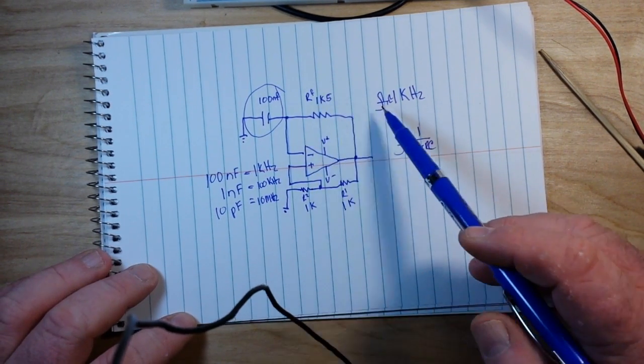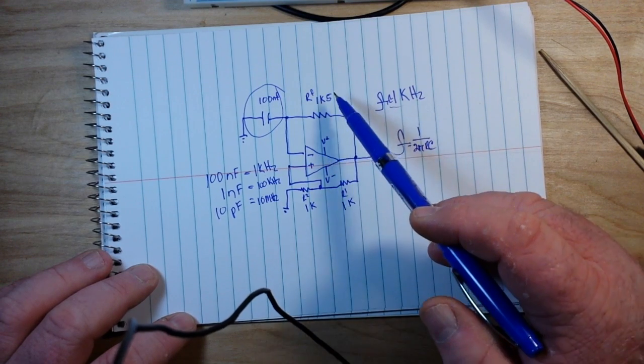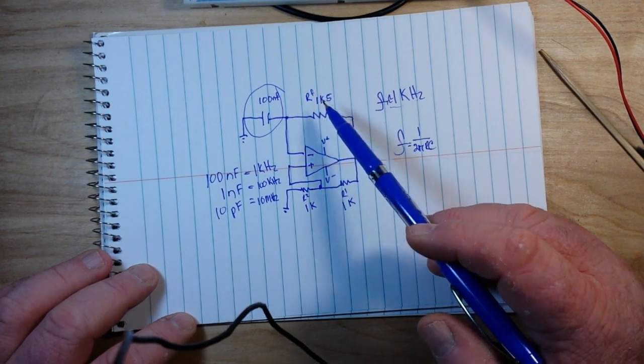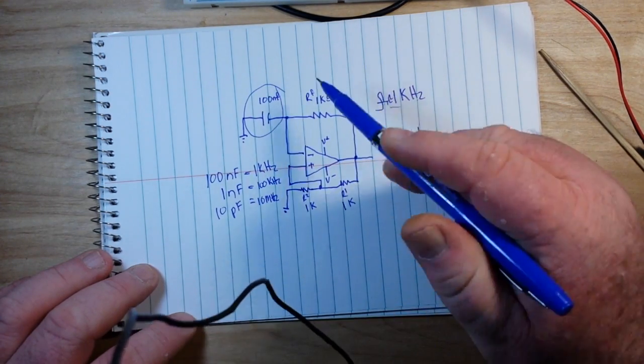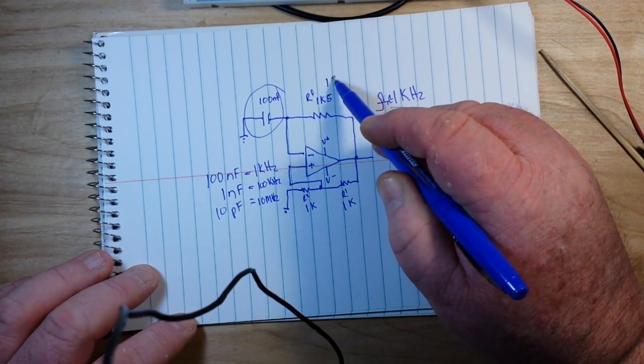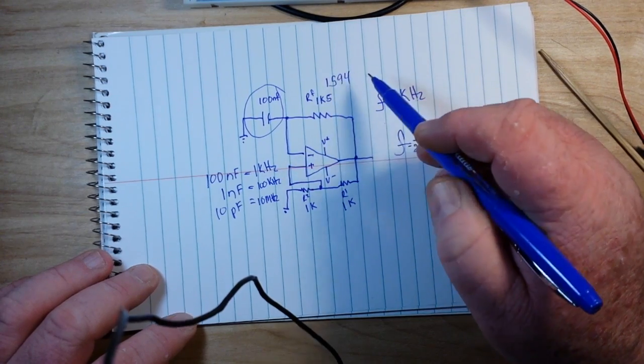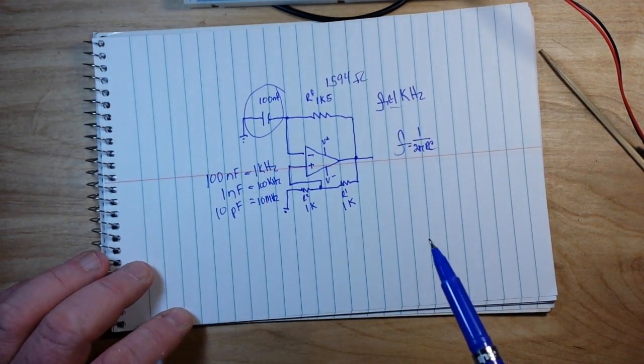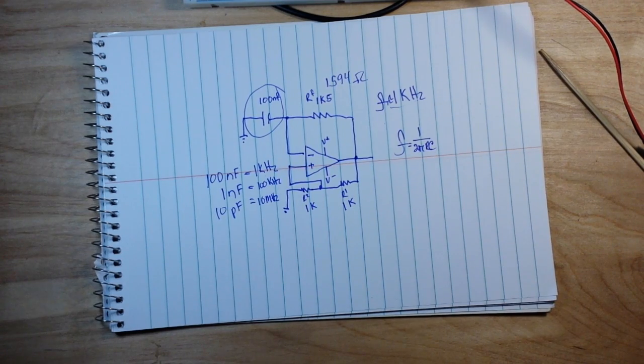Now like I said, it is about 1 kilohertz using a 1k5 resistor. I actually found this resistor to be 1594 ohms and that gives us right on 1 kilohertz.